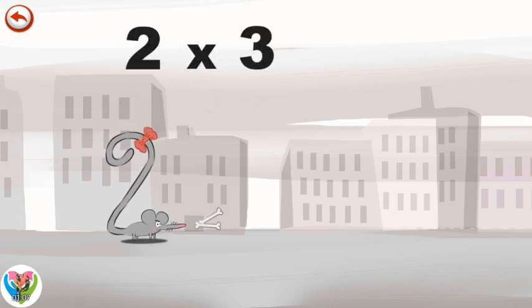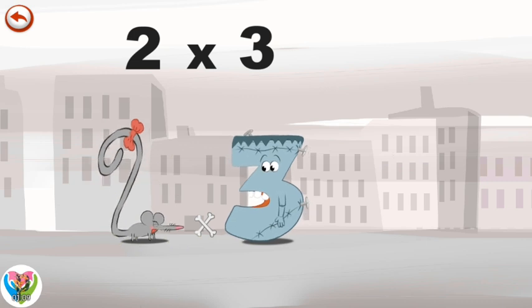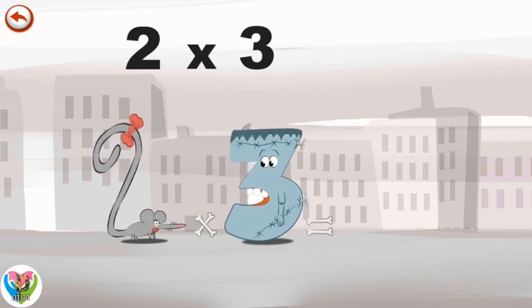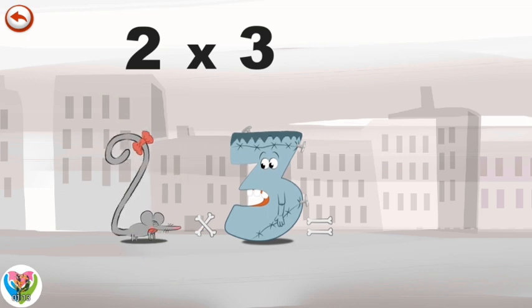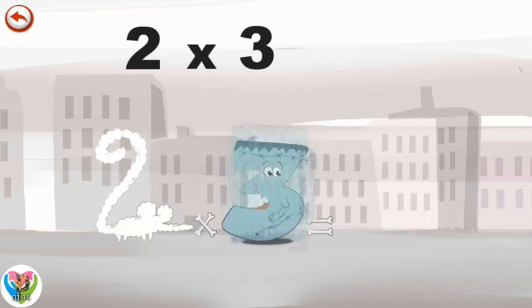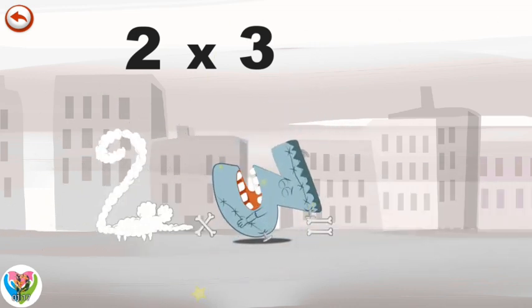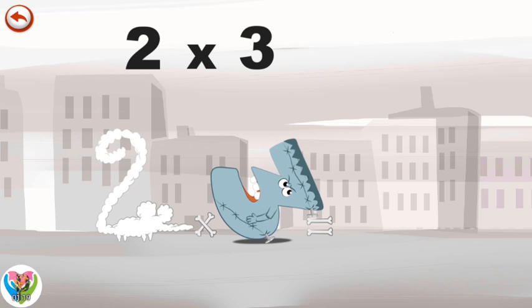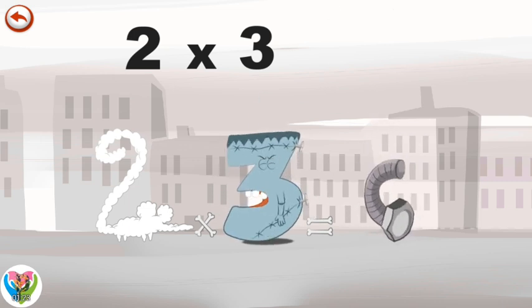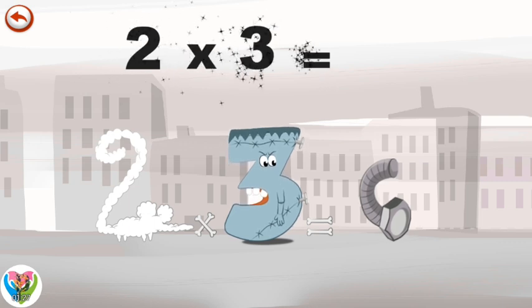When the mouse 2 squeaks sees Threkenstein the monster right in front of her, she panics. She runs away and pushes Threkenstein as she goes. He falls backwards and a bolt falls out of his head. The twisted bolt takes the shape of a 6. 2 times 3 is 6.